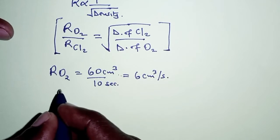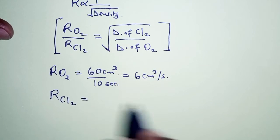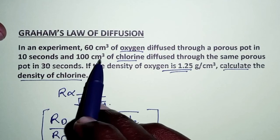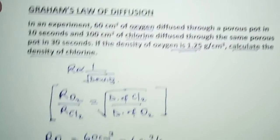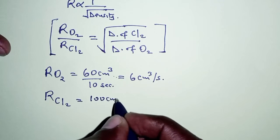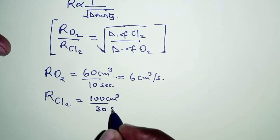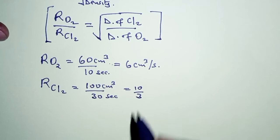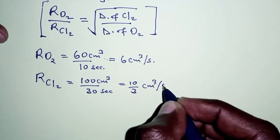The same applies to chlorine gas. For chlorine, the volume is 100 cubic centimeters and it takes 30 seconds to diffuse. So we have 100 cubic centimeters divided by 30 seconds, which gives us 10/3 cubic centimeters per second.